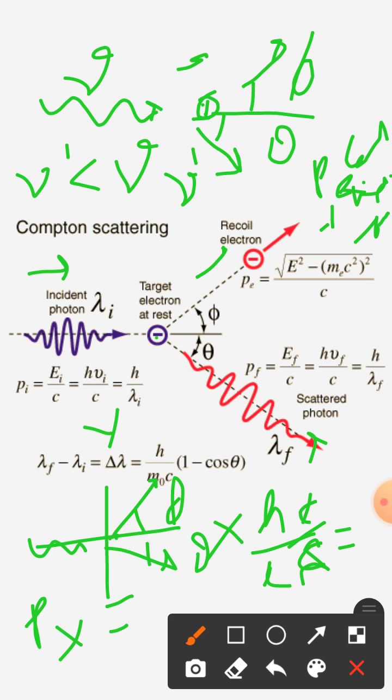We can see that by applying the mass energy relations of Einstein's relativity, the momentum of electron comes out: p equal to square root of E square minus me square c square to the whole power upon c.